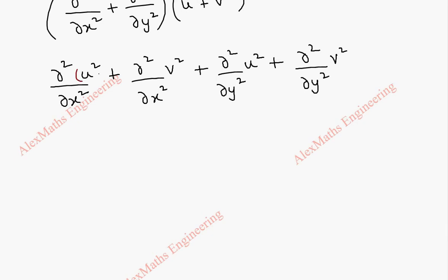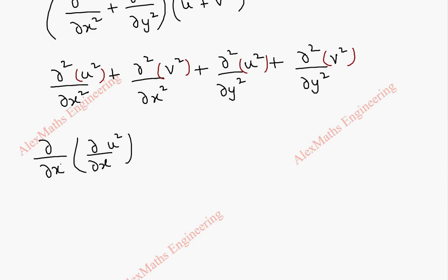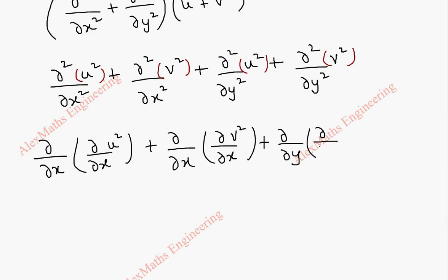We differentiate u² and v² with respect to x, then u² and v² with respect to y. We split the second derivative ∂²/∂x² as (∂/∂x)(∂/∂x) of u² and (∂/∂x)(∂/∂x) of v², and similarly (∂/∂y)(∂/∂y) of u² + (∂/∂y)(∂/∂y) of v².